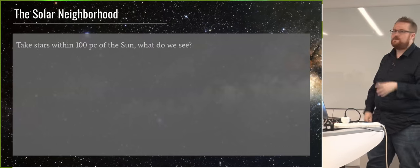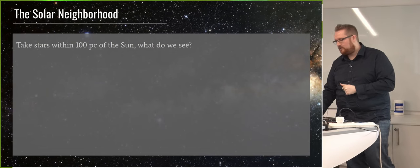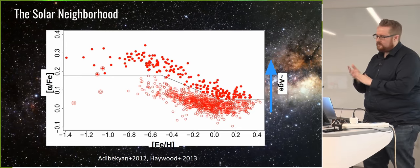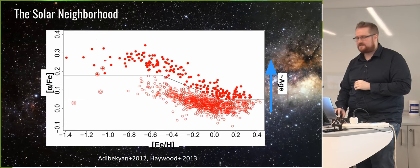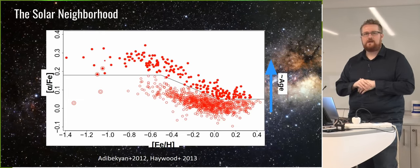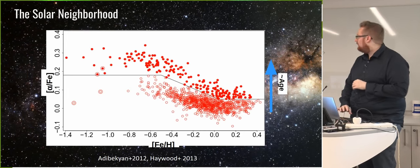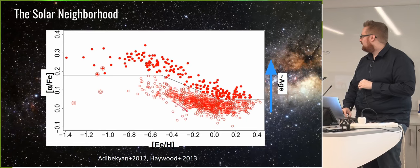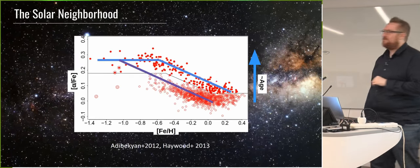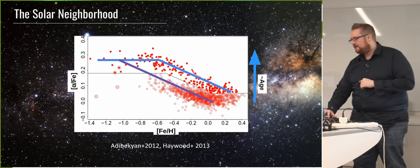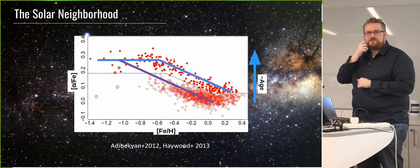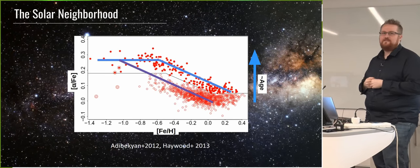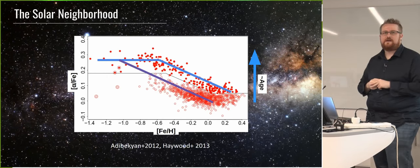If you look at stars around the Sun in the alpha-to-iron ratio, from Adebekian and Haywood 2013, you can see we have high alpha metal-poor stars — the oldest stars in the galaxy, formed before any Type Ia's kicked off. There's a knee where the alpha-to-iron ratio starts dropping. But we also have a parallel track — a more metal-poor version — that looks a lot like the cartoon with high and low star formation rate populations. Yet these stars are all within 50 parsecs of the Sun right now. So how do you get stellar populations different in metallicity by a factor of 5 or 10 in the same place?